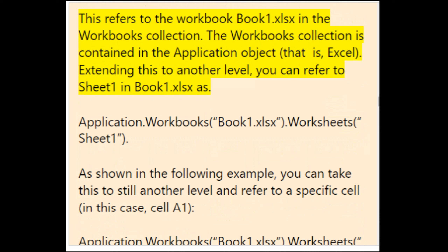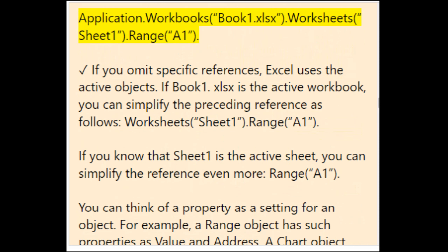Extending this, you can refer to Sheet1 in Book1.xlsx as Application.Workbooks("Book1.xlsx").Worksheets("Sheet1"), and further to a specific cell as Application.Workbooks("Book1.xlsx").Worksheets("Sheet1").Range("A1"). If you omit specific references, Excel uses the active objects. If Book1.xlsx is the active workbook, you can simplify to Worksheets("Sheet1").Range("A1"), and if Sheet1 is active, simply Range("A1").